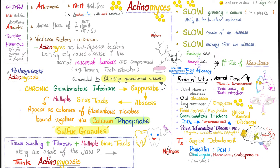If you want to be a good doctor, remember this: if your patient has tissue swelling, plus fibrosis, plus multiple sinus tracts along the angle of the jaw — think actinomycosis.